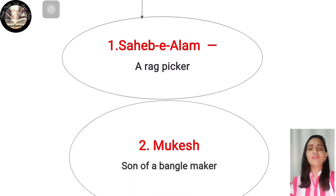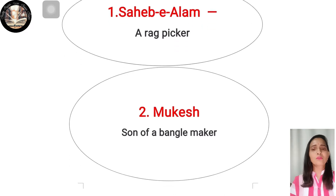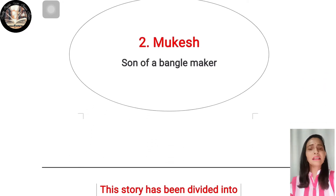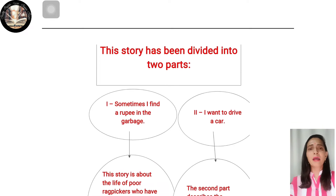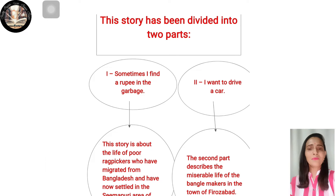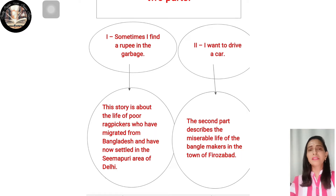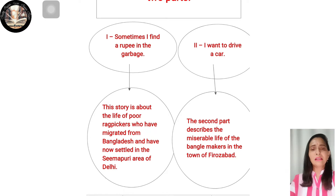The first character is Sahib-e-Alam — short name Sahib — who is a rag picker. The second character is Mukesh, the son of a bangle maker. The story is divided into two parts: the first is 'Sometimes I Find a Rupee in the Garbage', and the second is 'I Want to Drive a Car'.